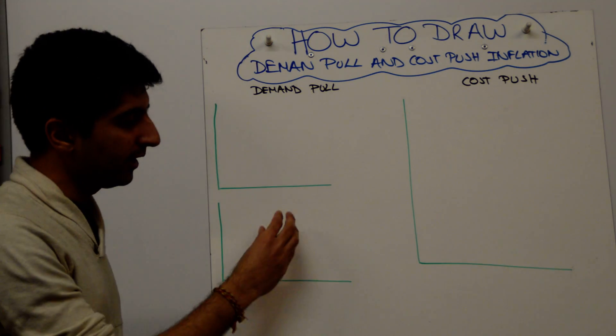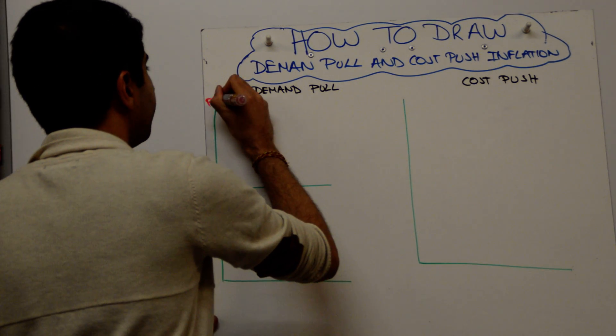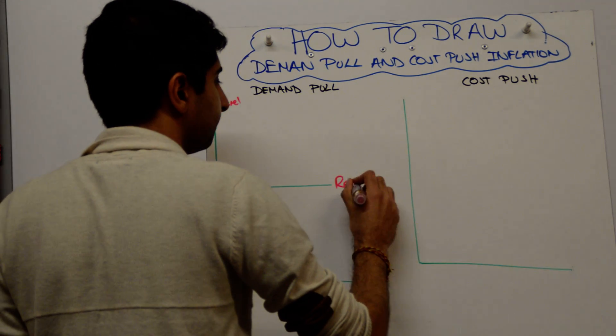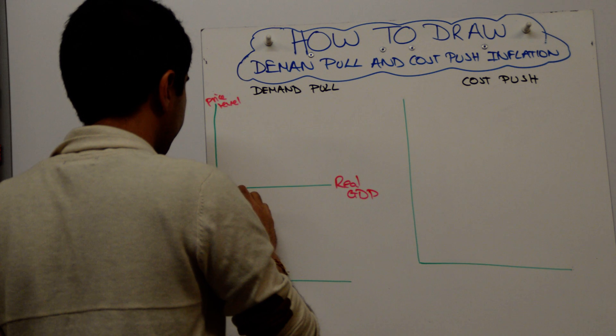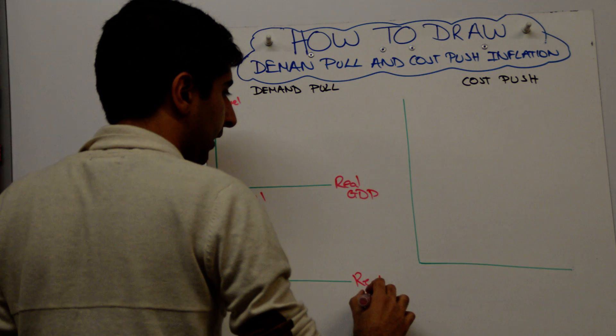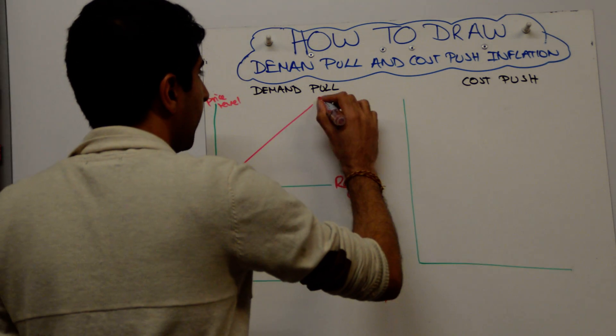and SRAS, and then the Keynesian models. So two different ways you can show it, both are equally fine. So I'll have price level and real GDP, and we'll have price level and real GDP. So labeling both.